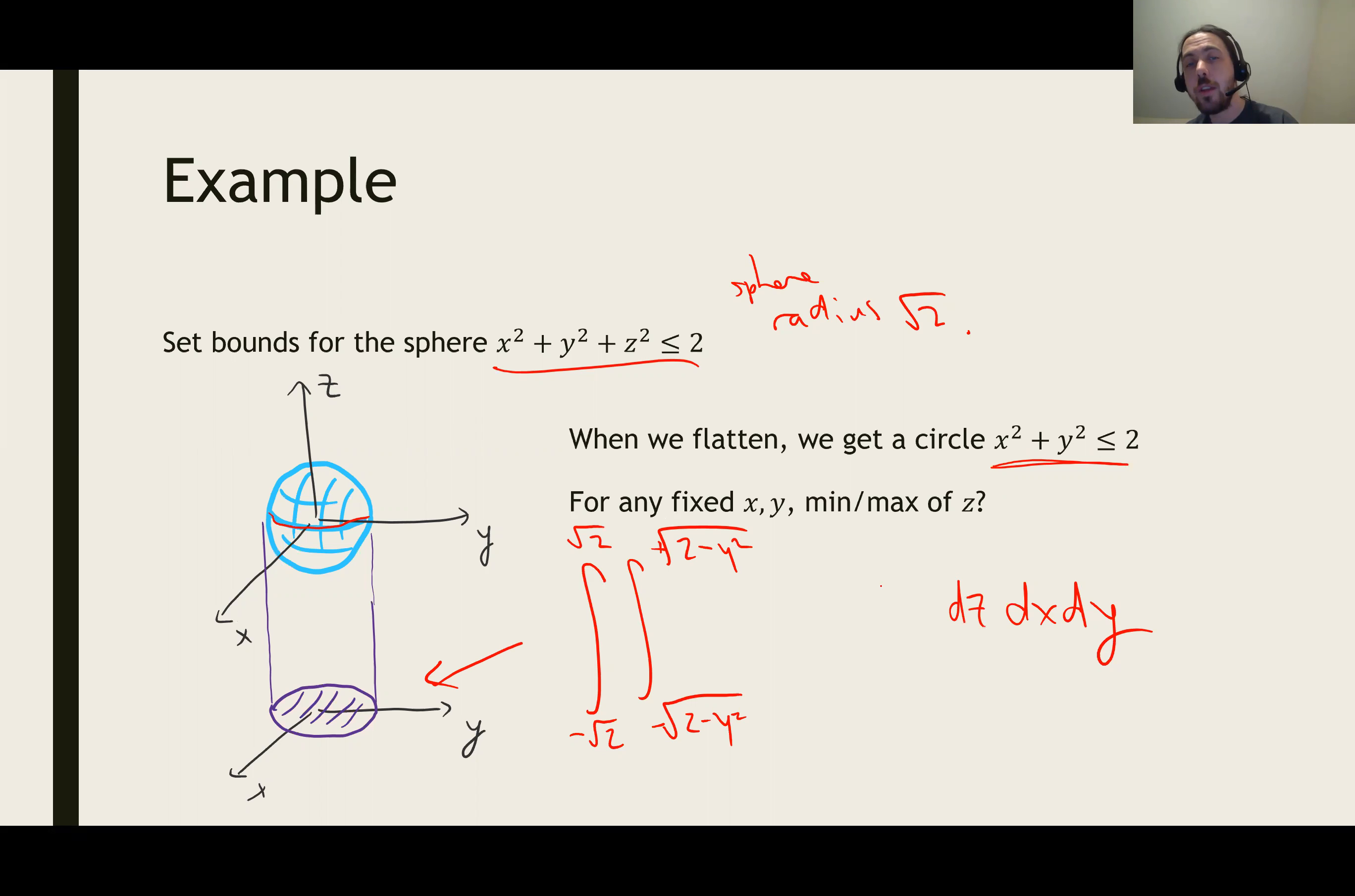And then on the inside, we have to say, okay, what's the biggest and smallest that z could be? For this sphere, we can solve for z. We can say that z squared is less than or equal to the square root of 2 minus x squared minus y squared. The biggest that z can be is on top when z is equal to that square root. And the smallest that z can be is z is minus the square root of 2 minus x squared minus y squared, like so. And so those are what we put as the bounds for our innermost integral, like so.